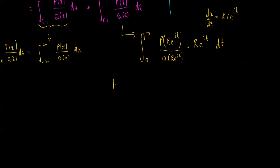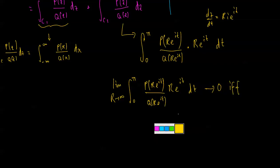Well, the only way the limit as r goes to infinity of this integral, 0 to pi, p r e to the i t on q r e to the i t, r e to the i t dt, approaches 0, if and only if the degree of q of x is strictly greater than or equal to the degree of p of x plus 2, okay?